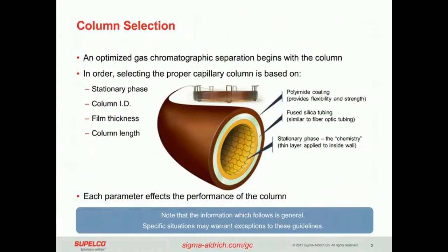GC columns have a coating of polyimide on the outside that gives it the brown or orange hue. That's really designed to give the fiber optic tubing the flexibility and strength because we want to coil these into a specific diameter to fit into the instruments.